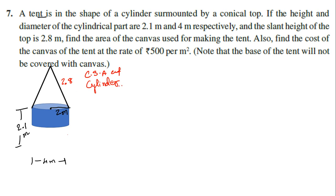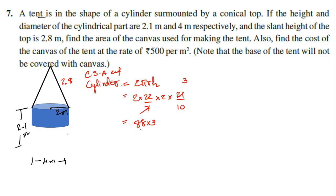CSA of cylinder is 2πrh. Since the base and top are not covered, we use curved surface area only. Substituting: 2 × (22/7) × 2 × (21/10). Simplifying — 7 cancels with 21, giving 3, and 22 × 2 × 2 × 3 / 10 = 264/10 = 26.4 square meters. Half of the question is complete.